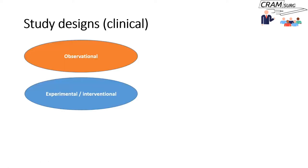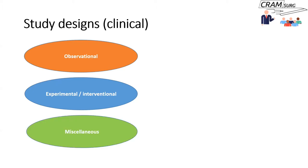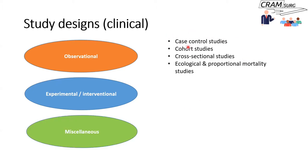When we're talking about study designs, we're limiting our discussion to clinical study designs. We talked about observational studies and experimental or interventional studies, and then we lumped a few other study designs under the category of miscellaneous. Under observational studies, you've got case control studies, cohort studies, and cross-sectional studies — the three main types we need to know about. There are also ecological and proportional mortality studies, though we don't come across many surgical research papers in that category.